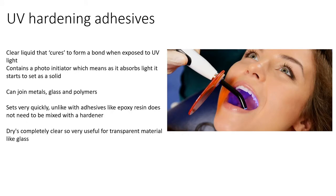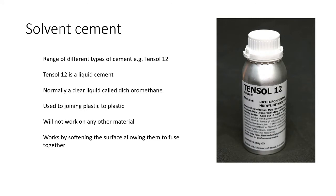UV hardening adhesives — you may have encountered these in dental work or acrylic nails. It's a clear liquid that cures when exposed to UV light, like the blue-light ray gun used in dentistry. It contains a photo-initiator which absorbs the light and causes it to set as a solid. It's used to join metal, glass, and polymers. It sets very quickly, requires no mixing of glue and hardener, and dries completely clear — which is why it's used in dentistry, where you can't see where the real tooth ends and the cap begins.